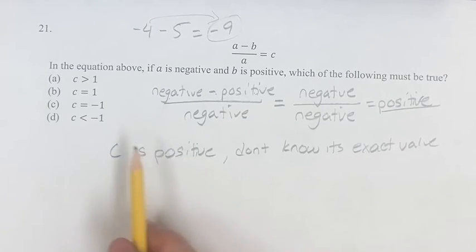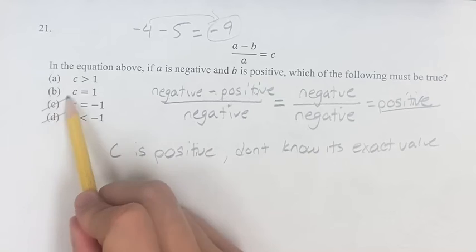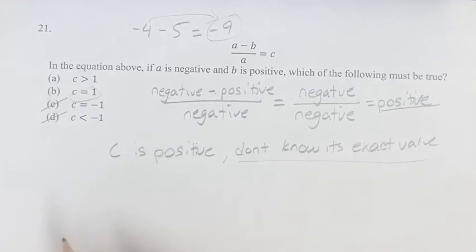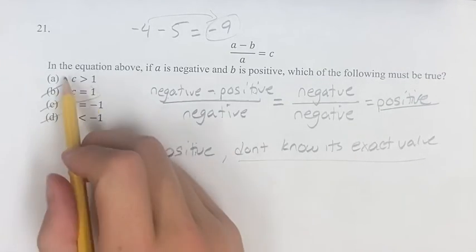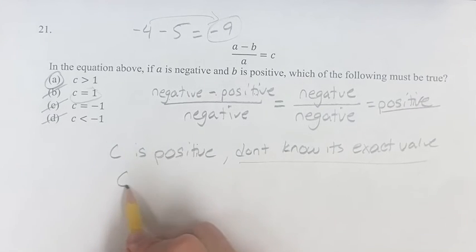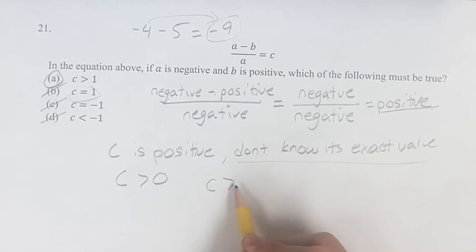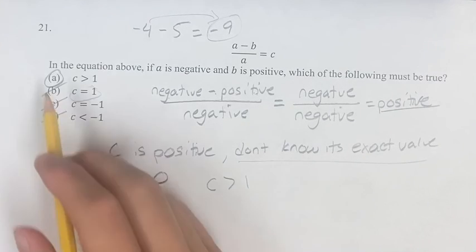So, we can say c is positive, so it's not less than negative 1, it's not equal to negative 1. And we don't know its exact value from this information, so therefore we don't know that it's equal to 1. So, therefore, c is greater than 1. All we know is that c is greater than 0. But, if c is greater than 0, c is also greater than 1. So, we know it's a.